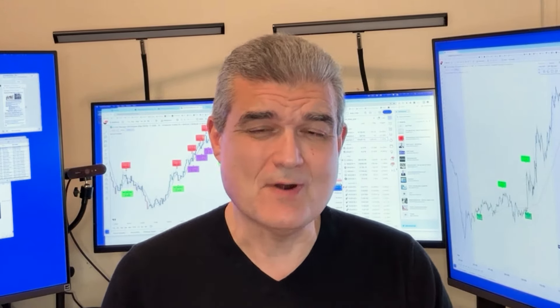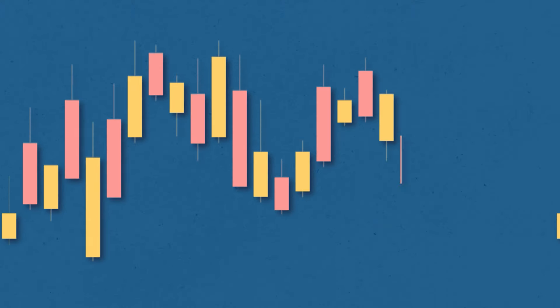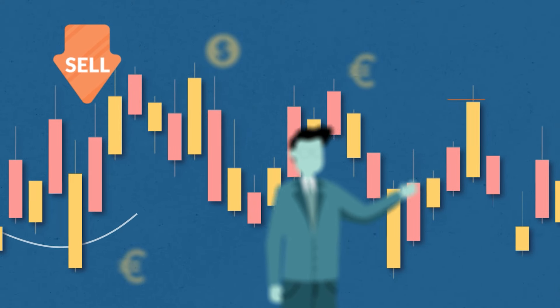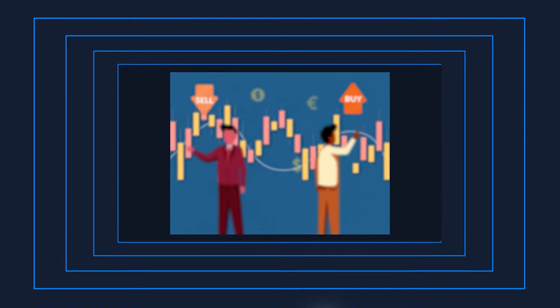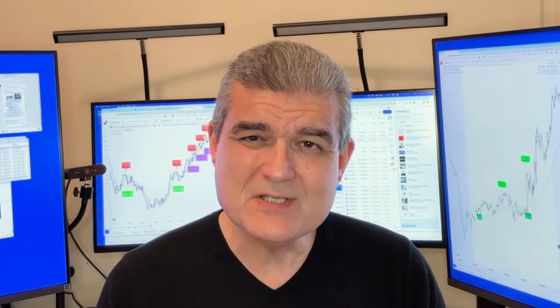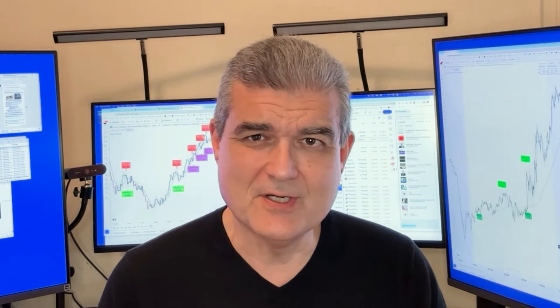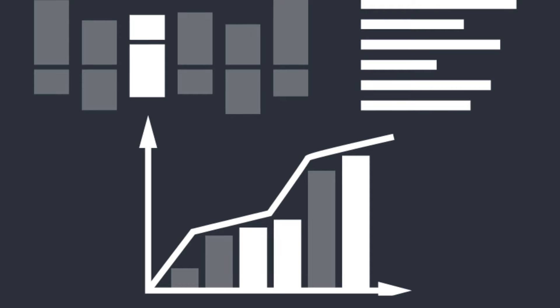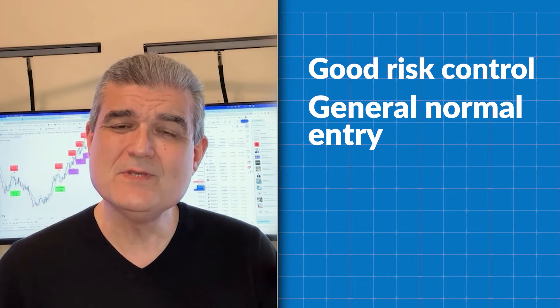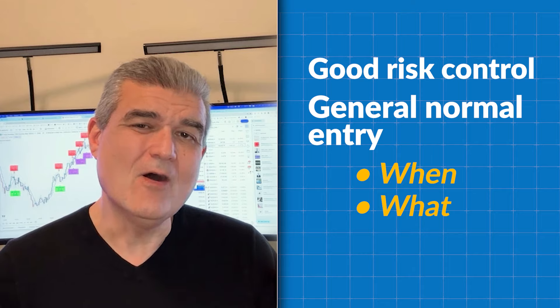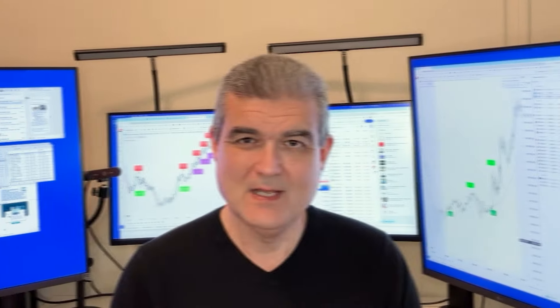Last, and very much least — to the surprise and consternation of many of you — is the how. Because really, it doesn't much matter. We spend all of our time and energy trying to figure out that one tiny variable, that single indicator that's going to give you the edge. All of it is absolute nonsense. It doesn't matter whether you're using moving average crossovers, price action, RSI turns, or stochastics turns — they all do the same thing. You're simply looking for a change in price action to confirm your basic thesis. You need good risk control, a generally normal entry, but most importantly you need to know when to enter the market, with what, and only last — how.